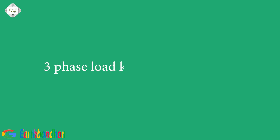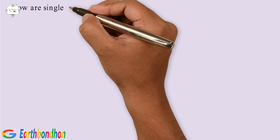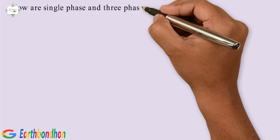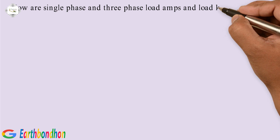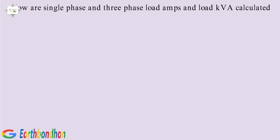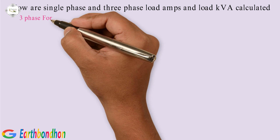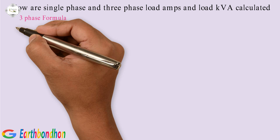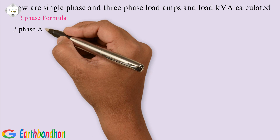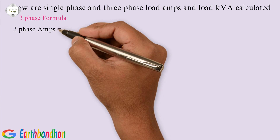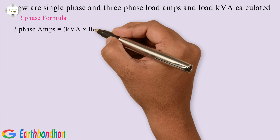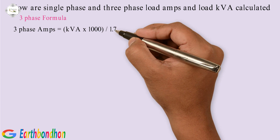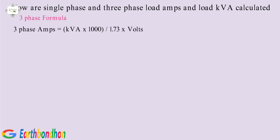Three phase load KVA calculation. Three phase formula: three phase amps equals KVA multiplied by 1000, divided by 1.73 multiplied by volts.